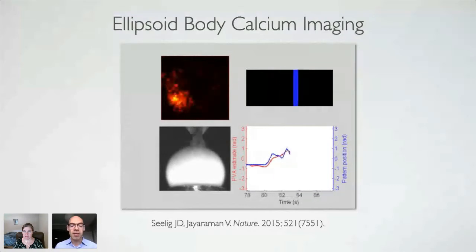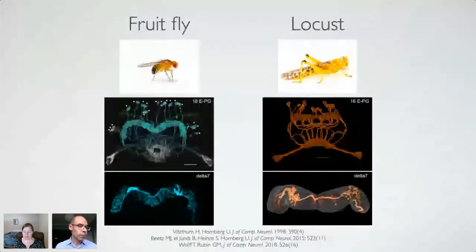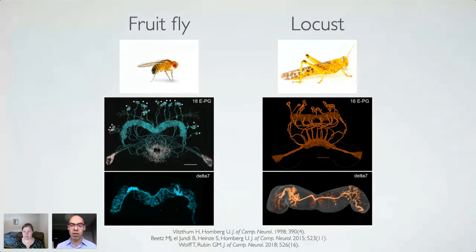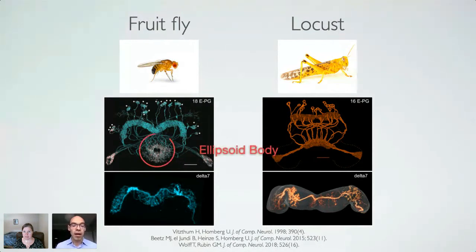The advantage of working with insects is that these days we have neuron-level anatomical detail of whole brain areas. If we look closer at the neural anatomy of the central complex of different insect species, we see several anatomical differences. Here we compare two species: the Drosophila fruit fly on the left and the desert locust on the right. We chose those two species because they are 400 million years apart in evolution, and it is therefore interesting to see how their homologous circuits compare. The ellipsoid body in fruit flies has a ring shape, while in locusts it is a linear shape.